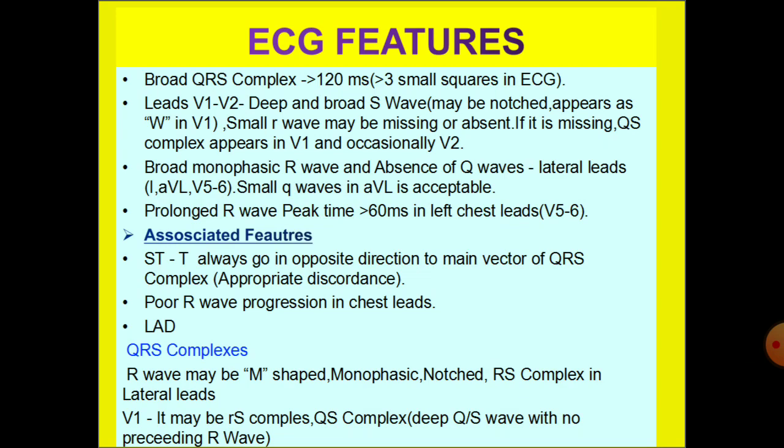Associated features include ST-T, which always goes in the opposite direction to the main vector of the QRS complex — this is called appropriate discordance. Other features are poor R wave progression in chest leads and left axis deviation.